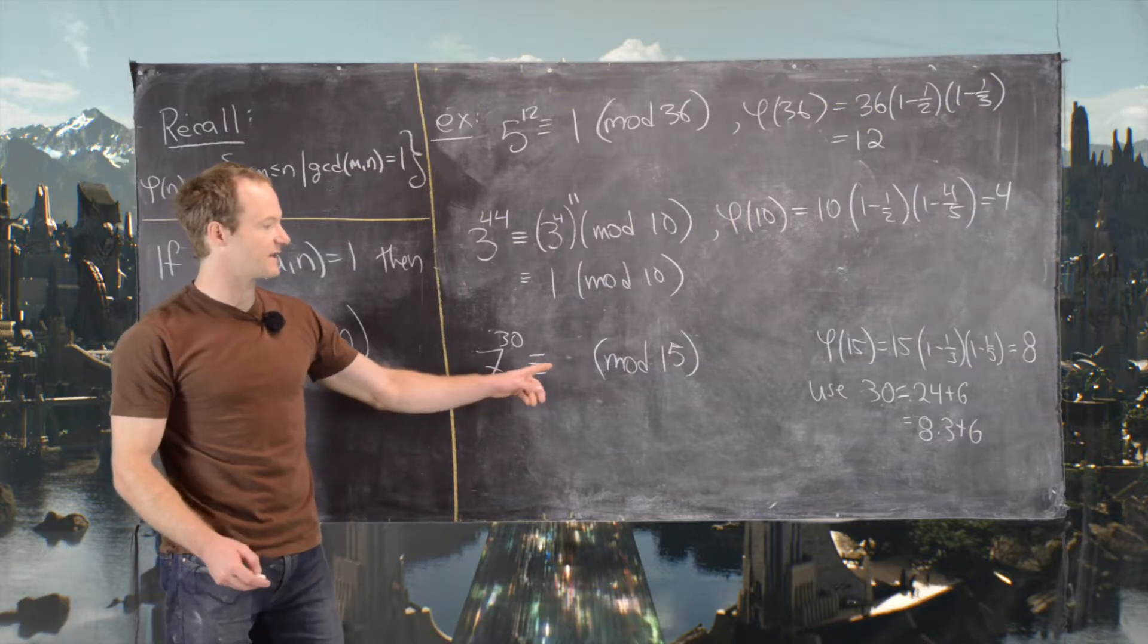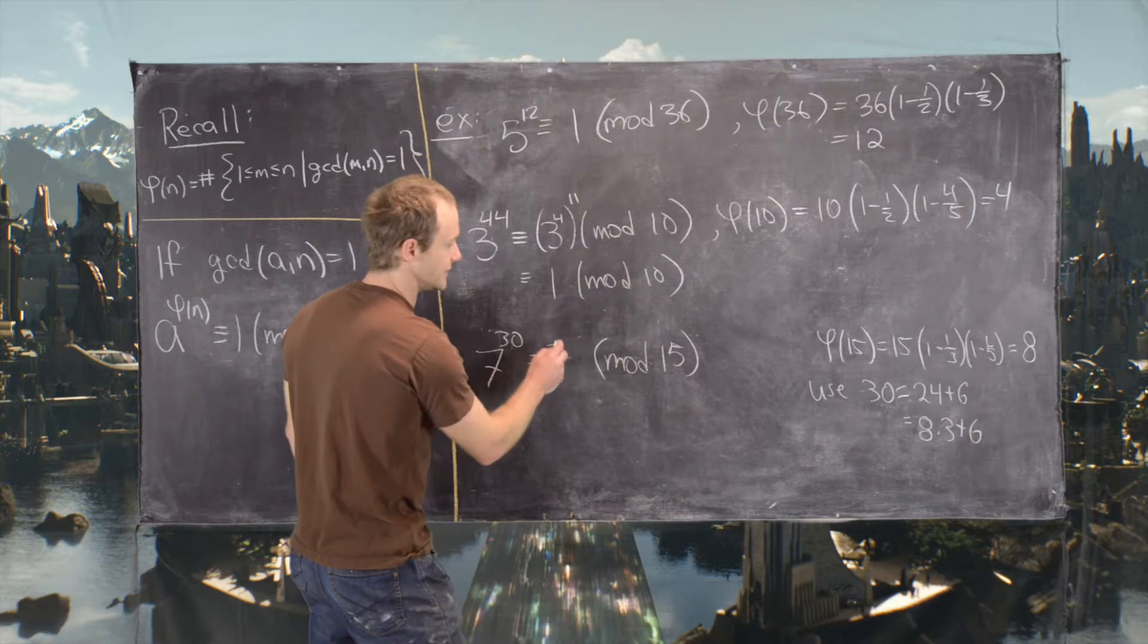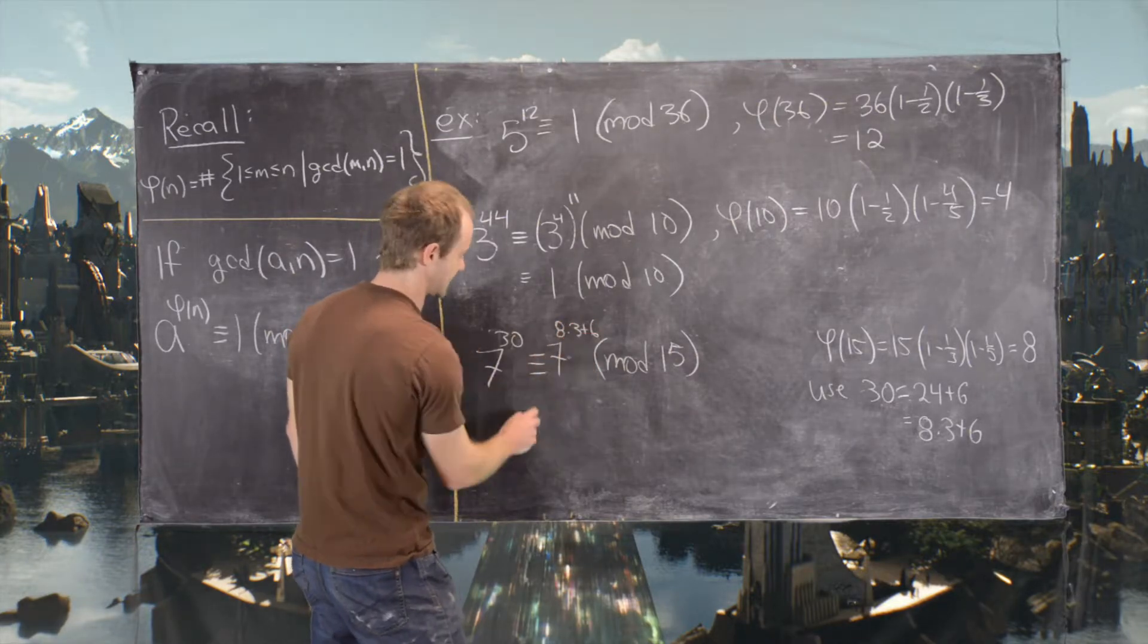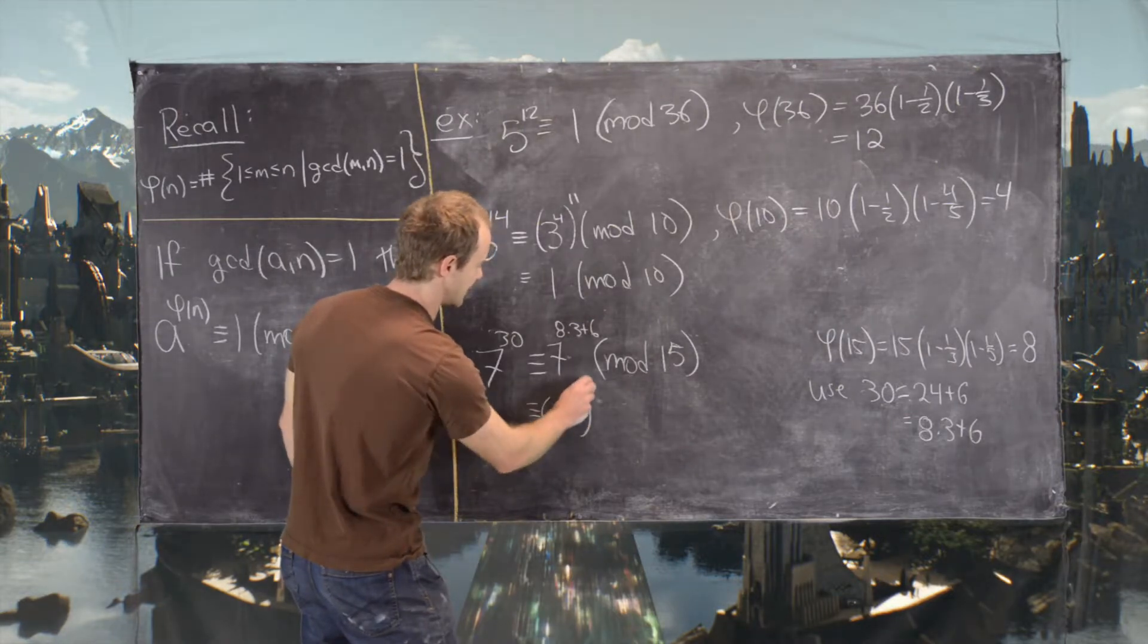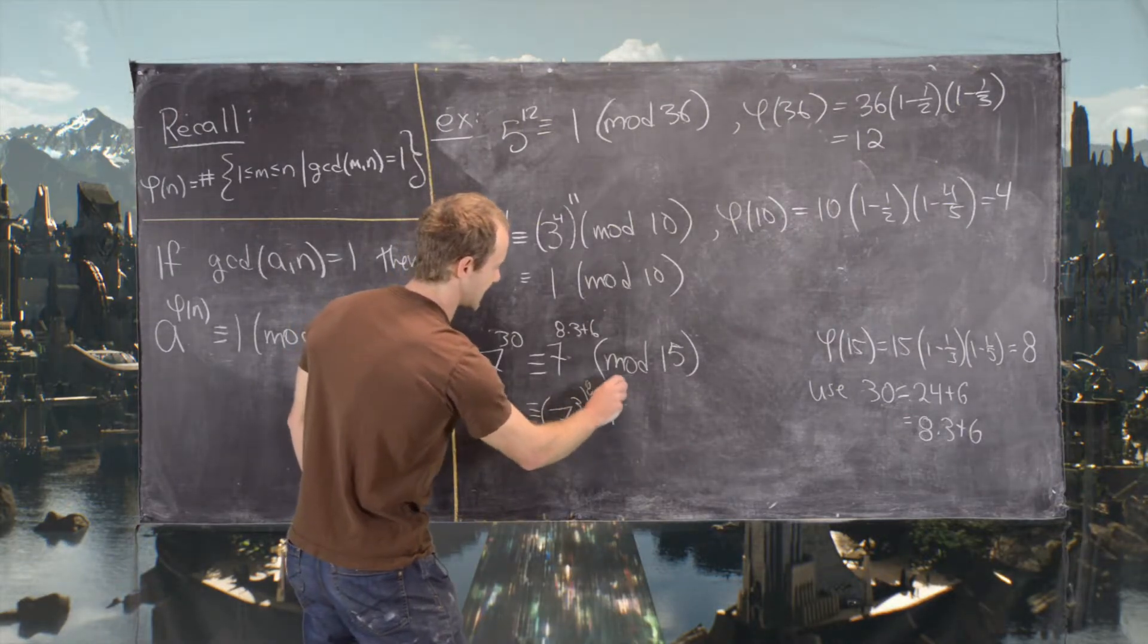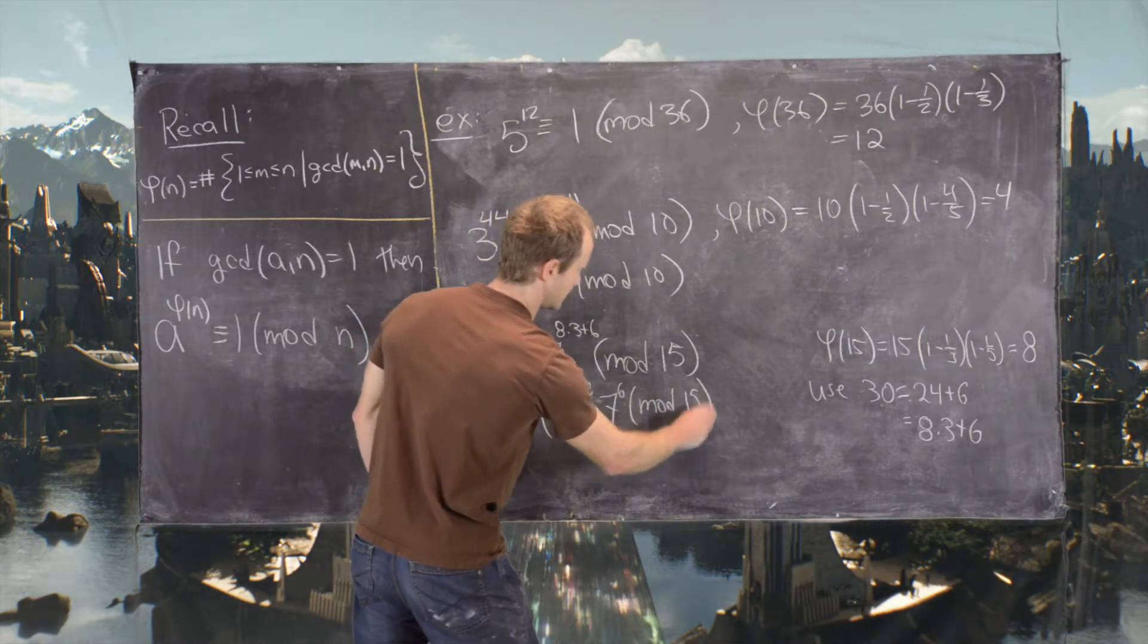So that's going to leave us with 7 to the 8 times 3 plus 6, which is the same thing as 7 cubed to the 8th power times 7 to the 6 mod 15.